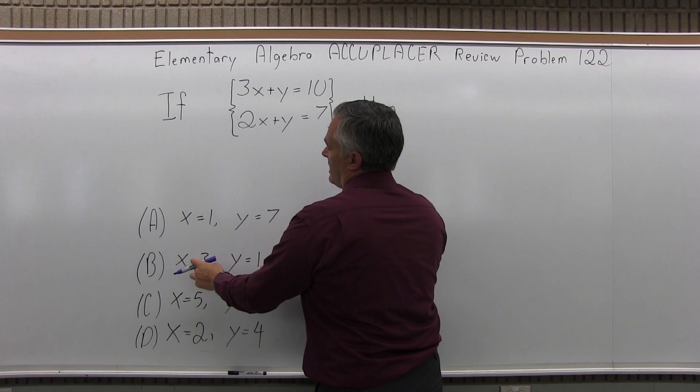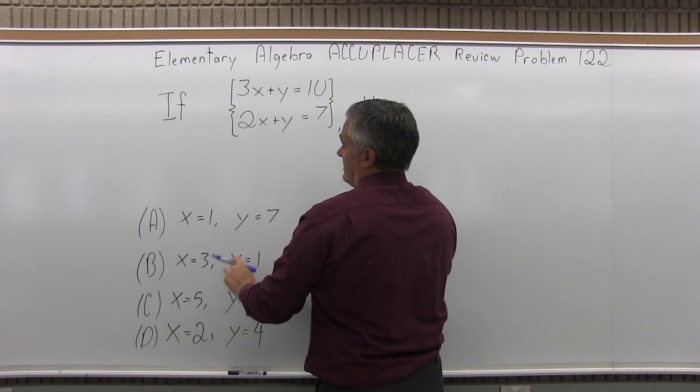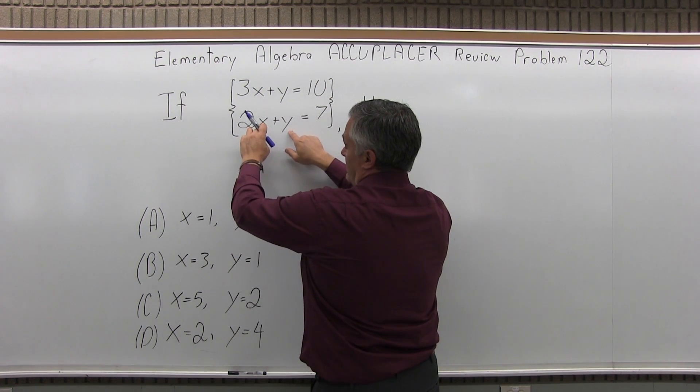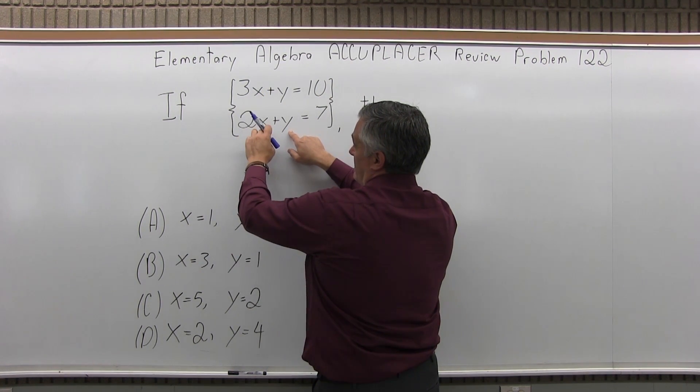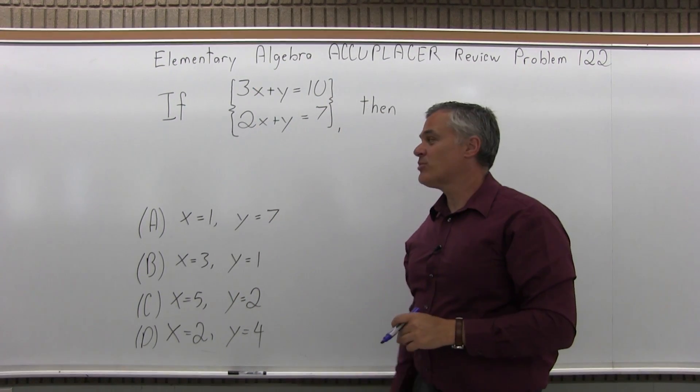If you try B, x is 3, y is 1, you'll have 9 and 1, 10 equals 10, so that's good. And for the bottom equation, x is 3, 2 times 3 is 6, 6 and 1 more, 7 equals 7, it's got to be B. You can get it like that pretty quick.